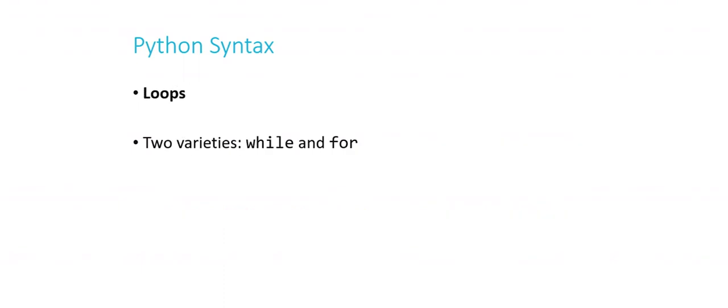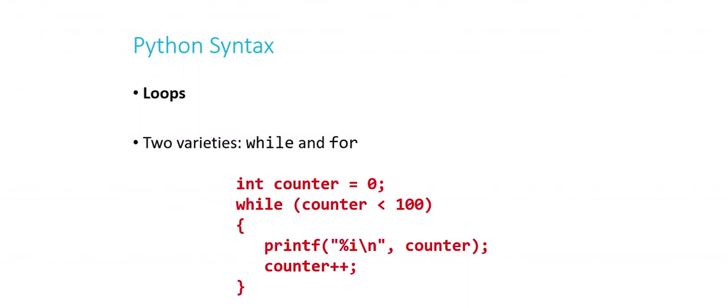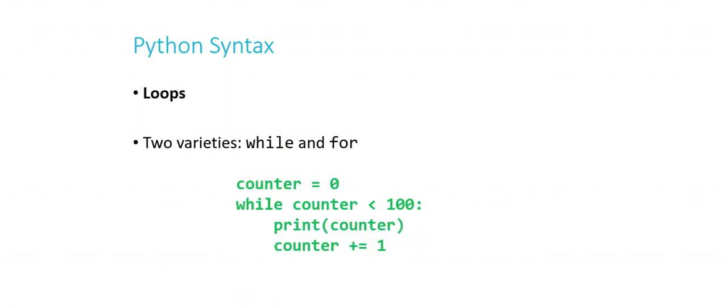Python has two kinds of loops — while and for. We don't have do-while loops anymore. For a while loop counting 0 to 99: in C you'd initialize a counter to 0, loop while counter < 100, print the number, and increment. In Python it's: 'counter = 0', 'while counter < 100:', then 'print(counter)' and 'counter += 1'. Note that '++' is not a valid increment operator in Python — you must use 'counter += 1'. Also, Python's print function automatically adds a newline, so you don't need '\n'.